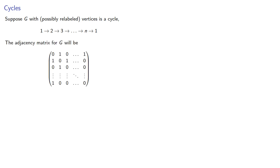The adjacency matrix for G will be, notice this is a circulant matrix whose first row is 0, 1, a whole bunch of 0s, and then 1.